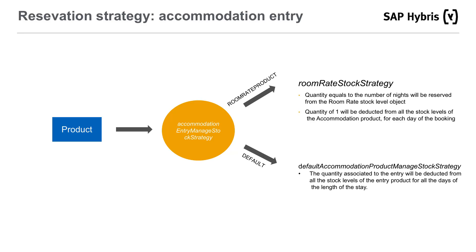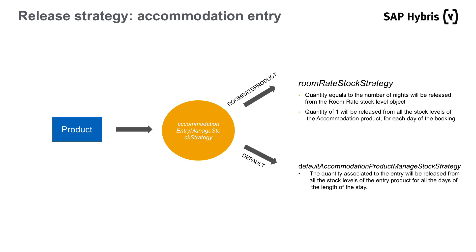The second entry is Default, linked to the DefaultAccommodationProductManageStockStrategy. This strategy reserves stock only from the product linked to the current entry — a service product for example — and the quantity associated to the entry will be deducted from all stock levels of the entry product for all days of the length of stay. For release stock, the strategy delegated to operate on entries of type accommodation is also called AccommodationManagedStockStrategy. Internally, it uses a map called AccommodationEntryManagedStockStrategy with different strategies based on product instance type. This map also contains two entries: RoomRateProductModel, linked to the RoomRateStockStrategy, which performs release actions for the room rate and accommodation products from the current accommodation order entry group.